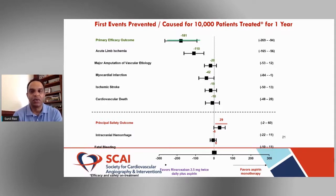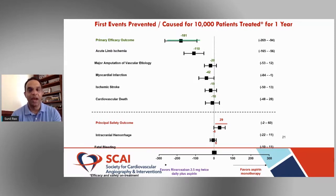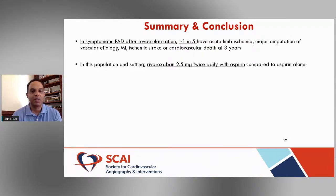To put results in practical context: for every 10,000 patients treated per year, rivaroxaban would prevent over 100 primary efficacy events, with directional benefits for amputations, myocardial infarction, and ischemic stroke — at the expense of 29 increased TIMI major bleeding events, with no increase in intracranial hemorrhage and no increase in fatal bleeding.